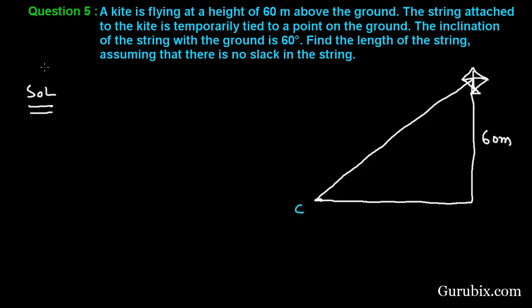We have to find the length of the string. Suppose this point is A, this point is B, and this is an angle of 90 degrees. This angle is given as 60 degrees. We have to find the length of the string, so let this be X meters.